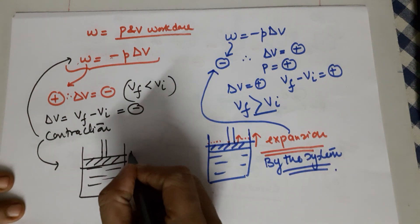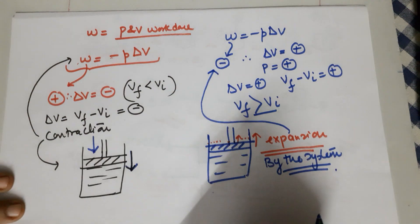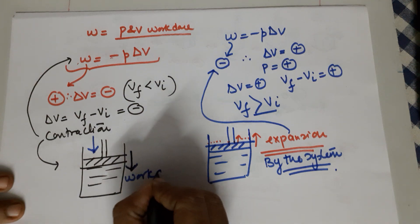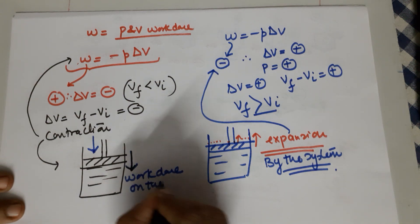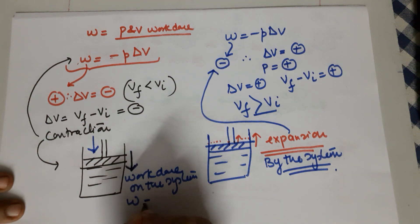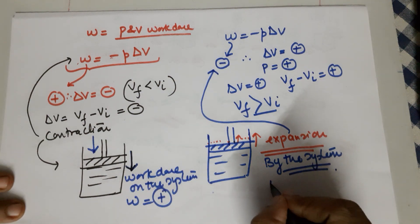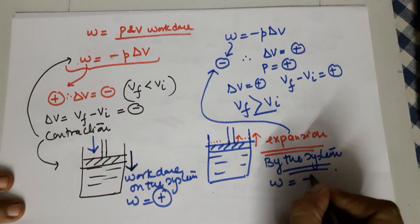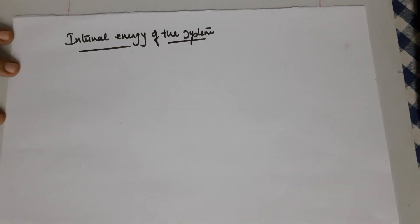To summarize: whenever there is contraction, pressure is exerted from outside, so work done is on the system (w is positive). When work is done by the system — as in expansion — w is negative. That concludes the sign convention for work done.